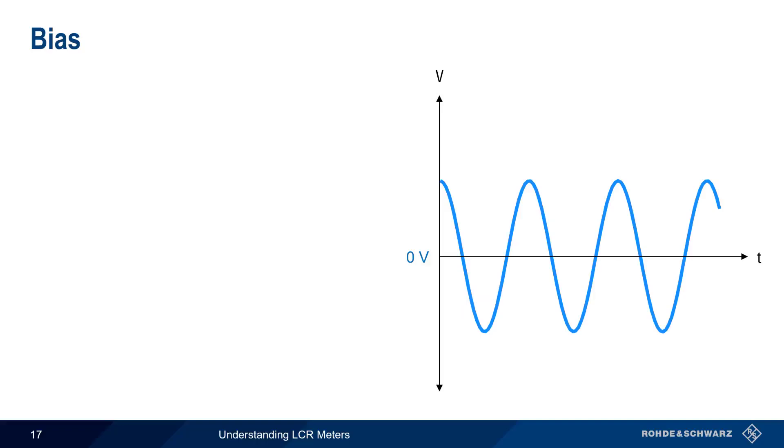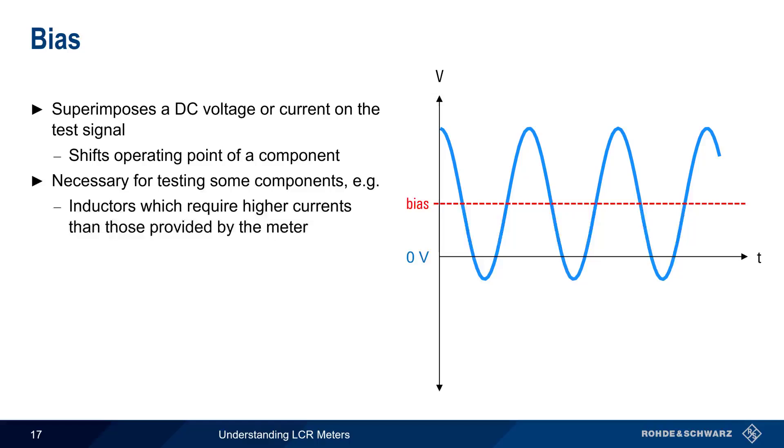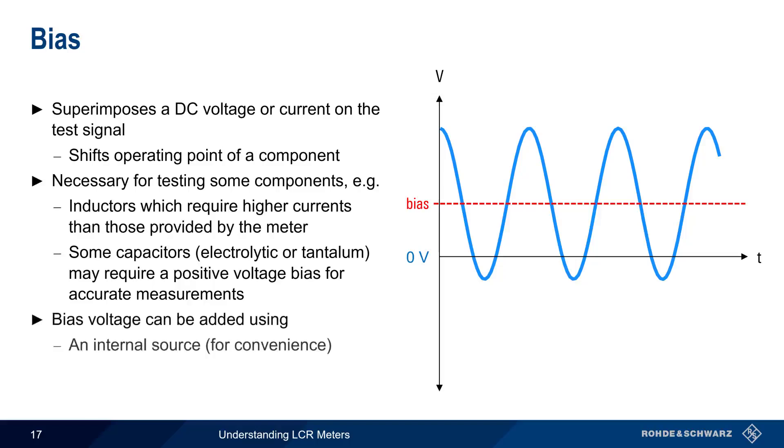Bias is another aspect of measurement level. Biasing superimposes a DC voltage or current on the test signal. This can be used to shift the operating point of some types of components when necessary for accurate measurements. For example, inductors may require a higher current than the test current provided by the meter. And some types of capacitors, such as electrolytic or tantalum, may require a positively biased voltage for accurate measurements. LCR meters therefore typically allow bias to be added in two ways, either using an internal bias source or by means of an external source, in cases where higher bias voltages are required.